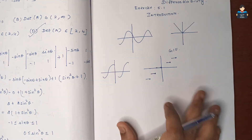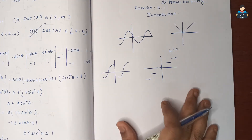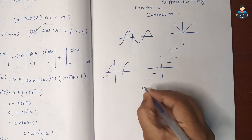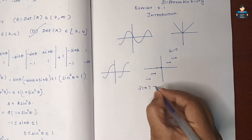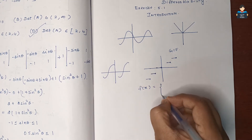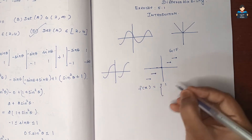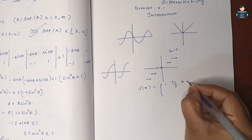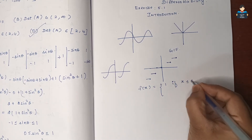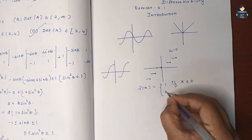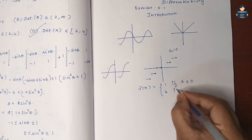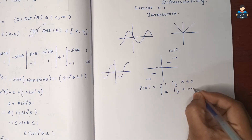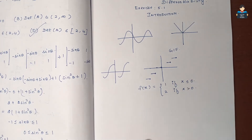Another example of discontinuity: f(x) = 1 if x is less than or equal to 0, and f(x) = 2 if x is greater than 0.